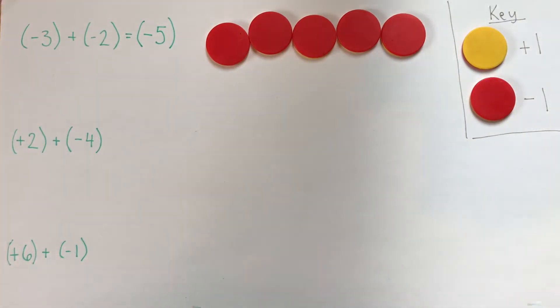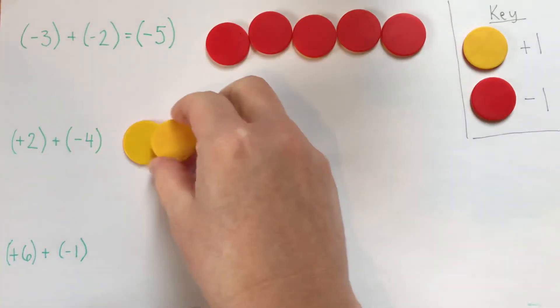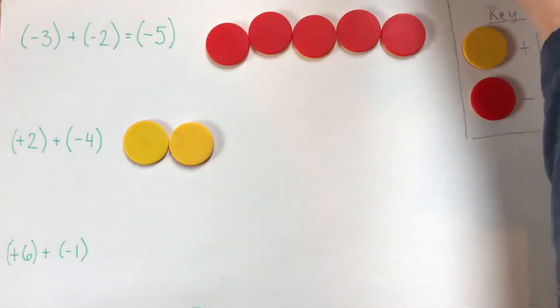The next two will have a little extra thing we need to think about once we get our answer. Let's start from the beginning. We'll start with positive two, so two yellows. Then we'll add negative four.